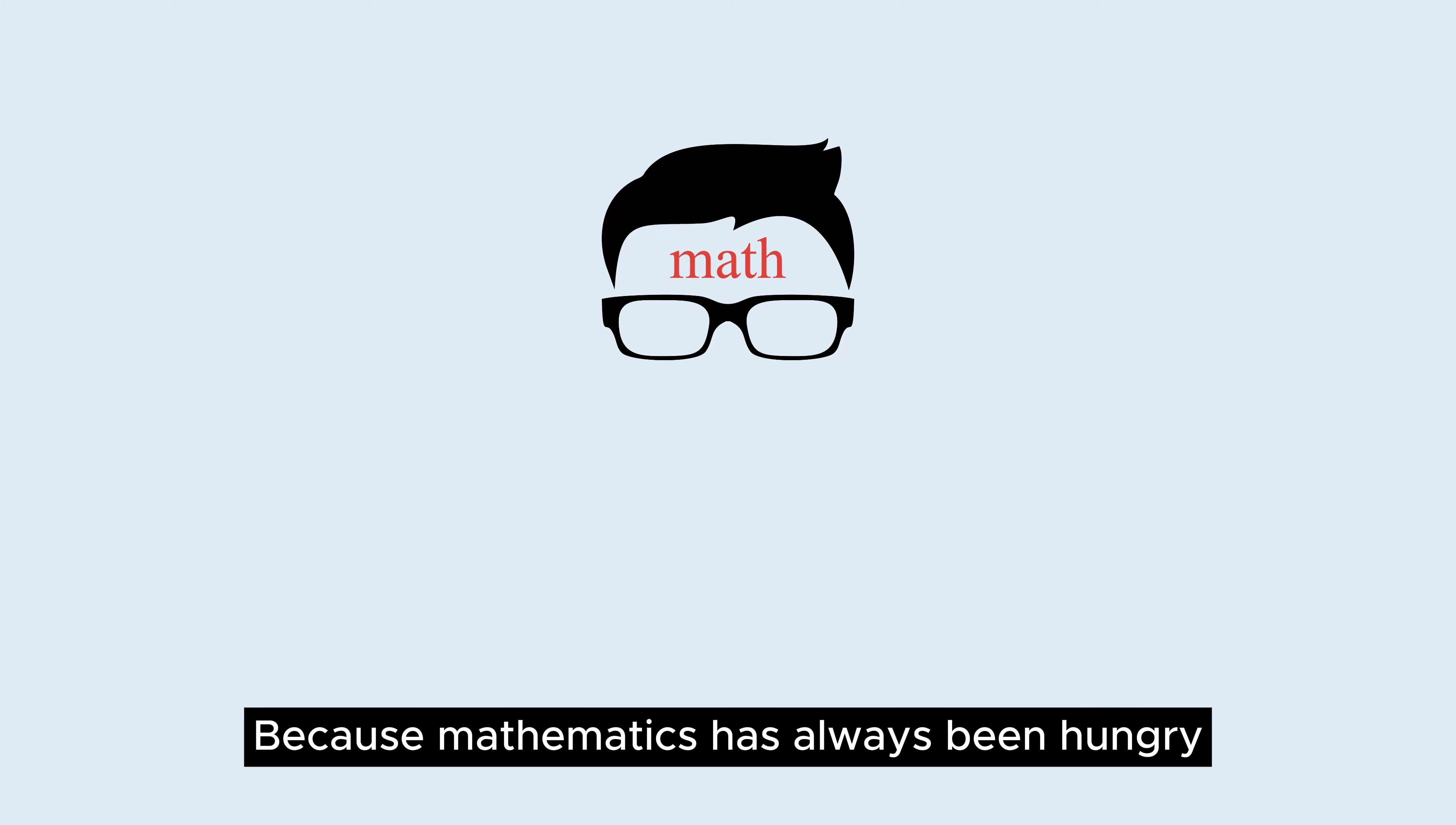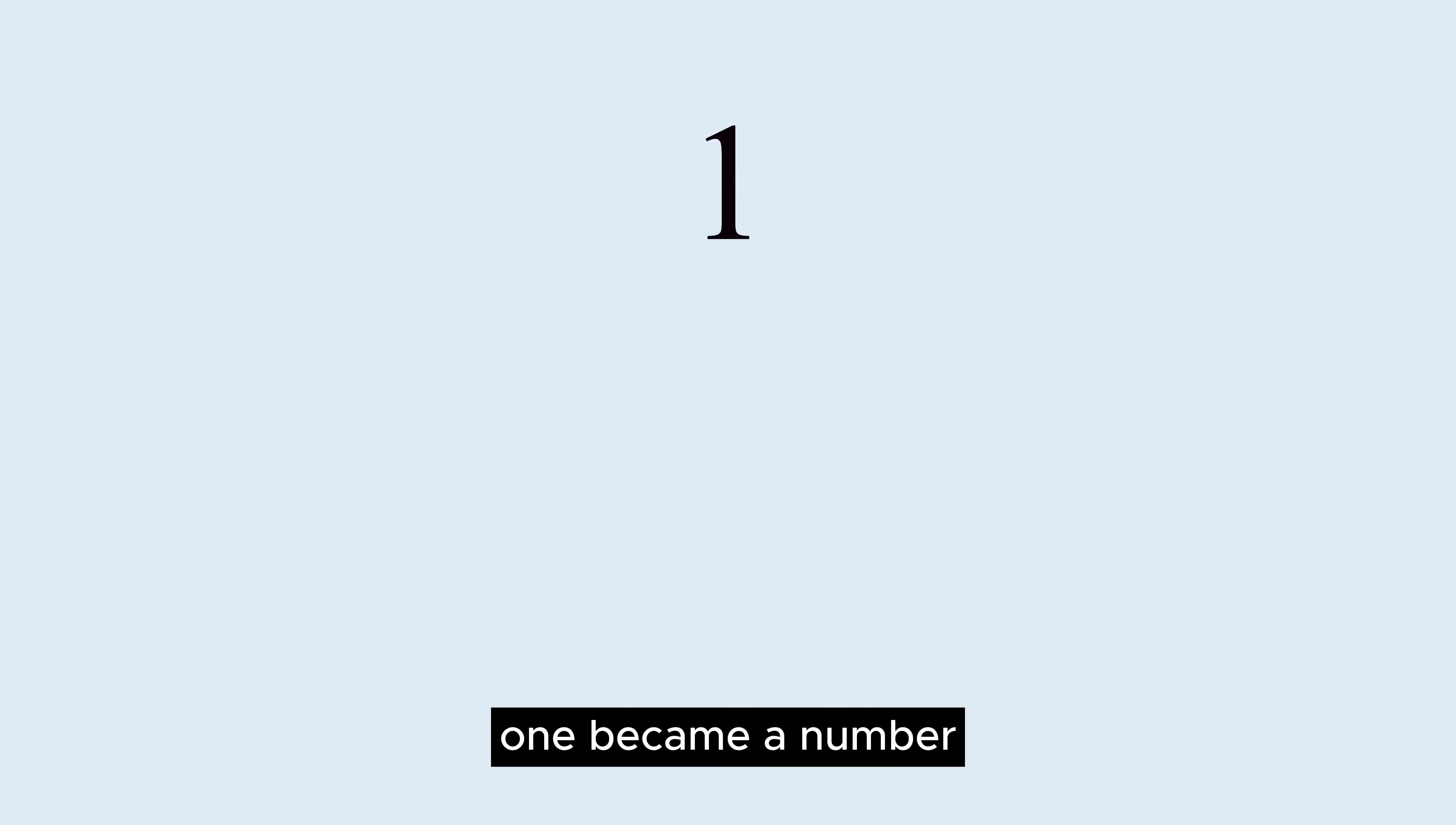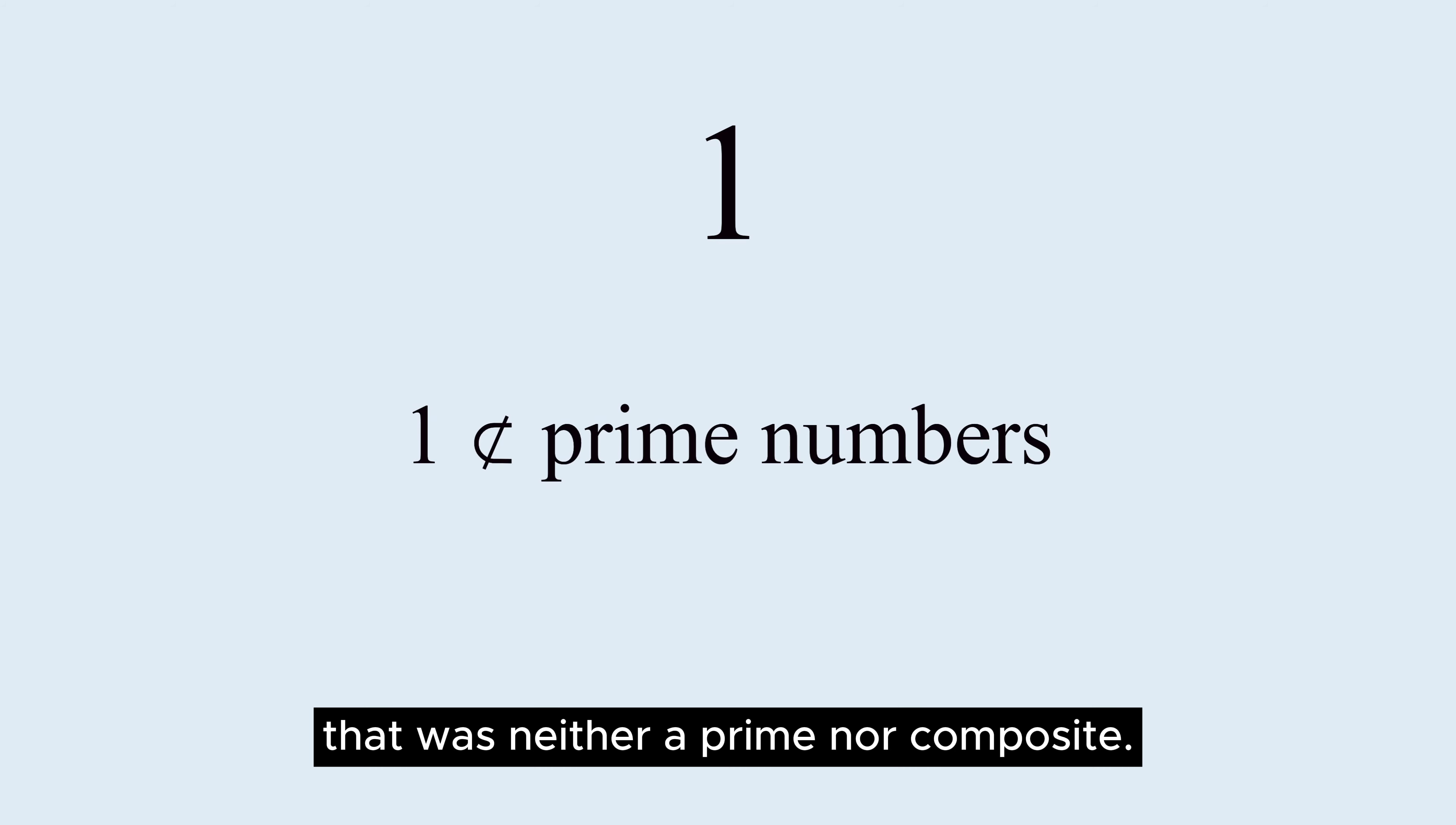Because mathematics has always been hungry for theorems and rules. As a result, one became a number that was neither a prime nor composite.